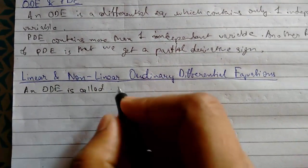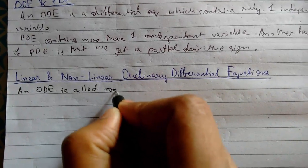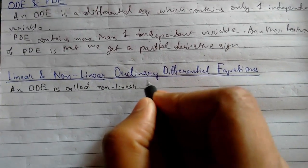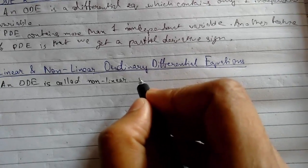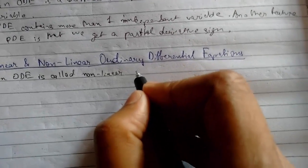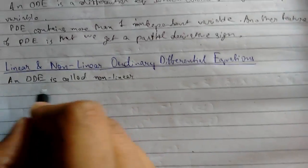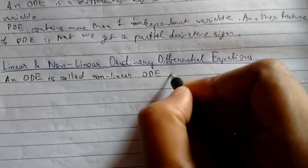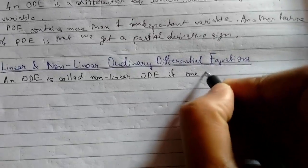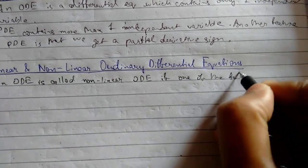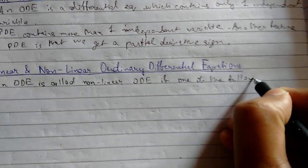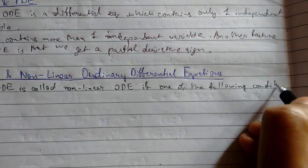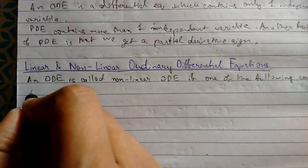An ordinary differential equation is called nonlinear. We will first discuss about nonlinear, and automatically we will get what a linear equation will be. So a nonlinear ODE must satisfy one of the following conditions.